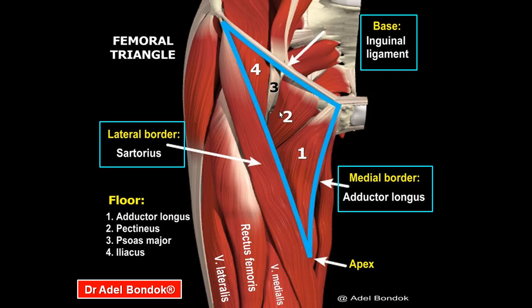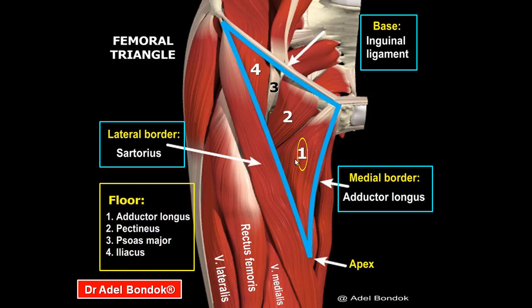The superficial fascia contains the great saphenous vein and cutaneous branches of the femoral nerve. The deep fascia contains the saphenous opening. The floor is formed of four muscles from medial to lateral: adductor longus, pectineus, psoas major, and iliacus.